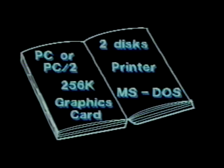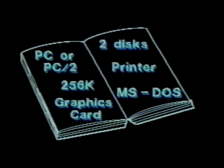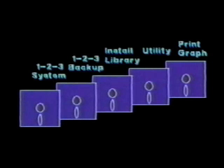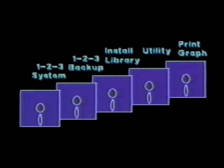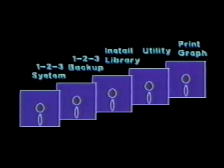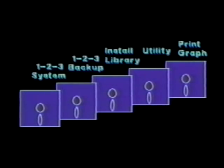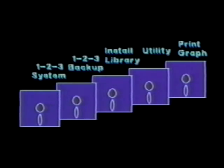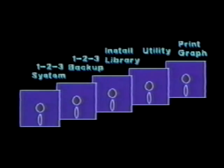The software is shipped on several disks. These include the 1-2-3 system disk and its backup, the install library disk, the utility disk, and the print graph disk.